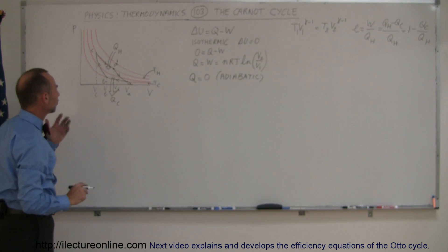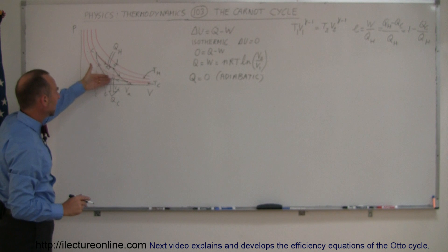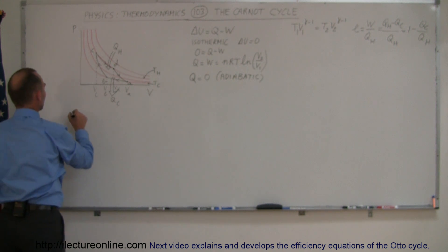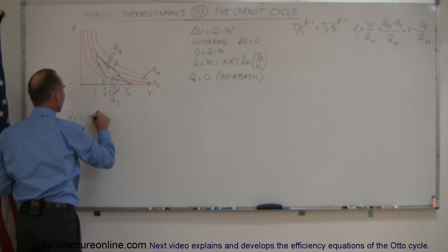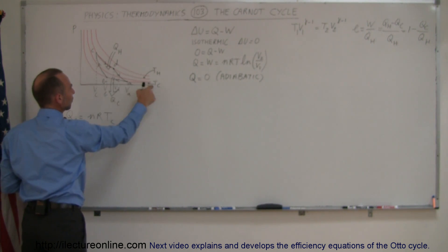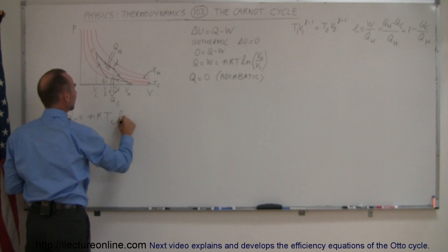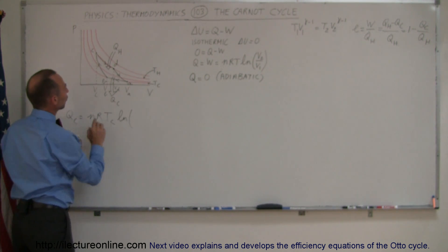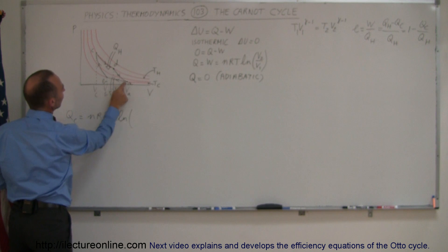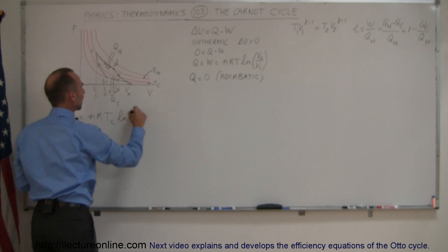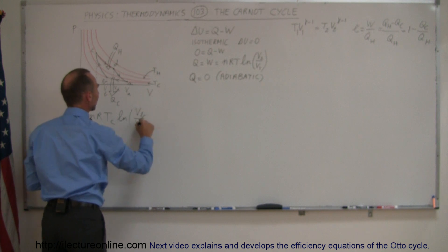So if we're going to use that, let's start with Q_cold, the heat expelled at the cold reservoir. Q_cold is equal to nR times the temperature cold, because at that point the temperature is T_cold, times the natural log of V_final over V_initial. So in this part of the cycle, in this process, V_final is V_B, and V_initial is V_A, so we write V_B divided by V_A.